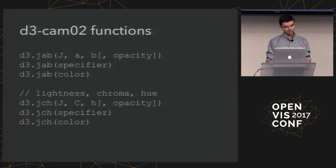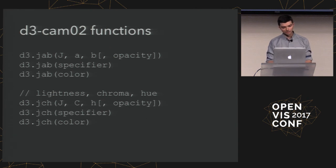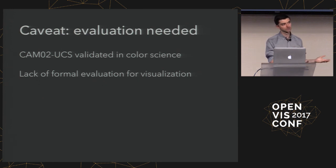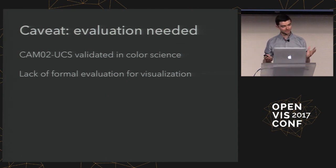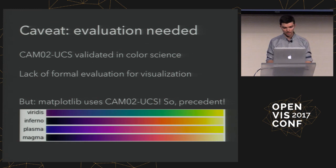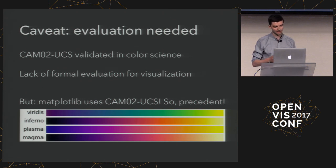For designers, the biggest difference is with simple linear continuous color scales — you end up with very different appearances. The bottom band shows RGB interpolation, the middle is CIE lab, and the top is CAMO2 UCS. For some scales, the CAMO2 interpolation looks completely different. Whether it's better still needs empirical testing, but it gives designers more freedom. Notably, matplotlib uses this color space for new color scales like Viridis. As far as I know, this is also the first JavaScript implementation of this color space.